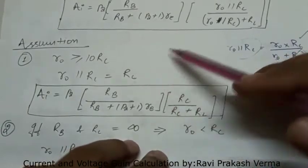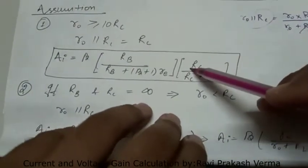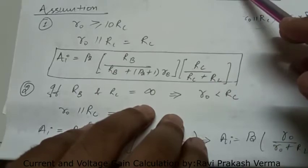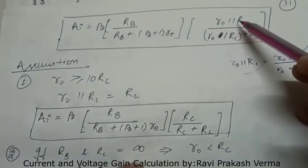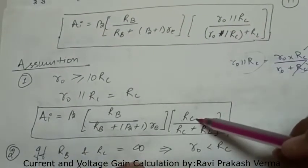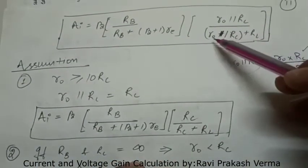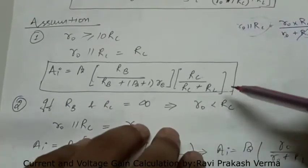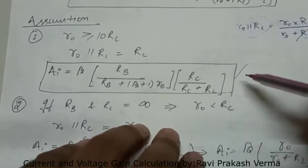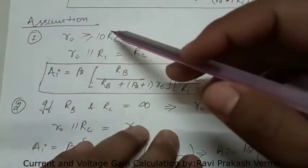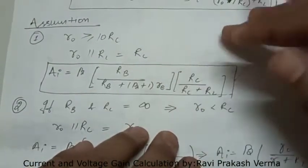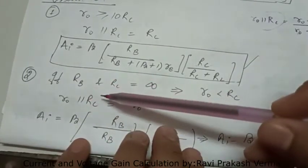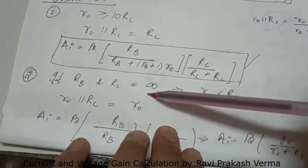By putting this approximation into our current gain equation, only the second term changes: in place of R naught parallel RC we substitute RC, and the denominator becomes RC plus RL.